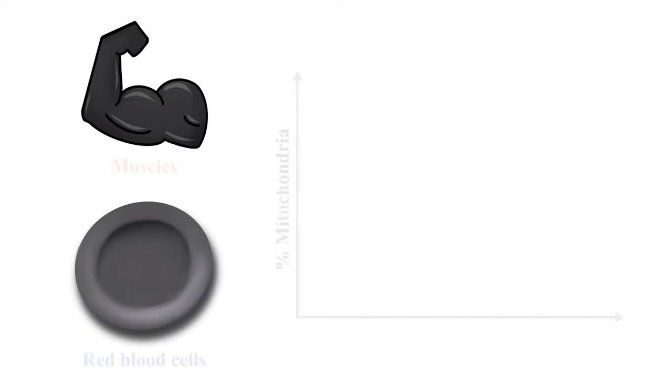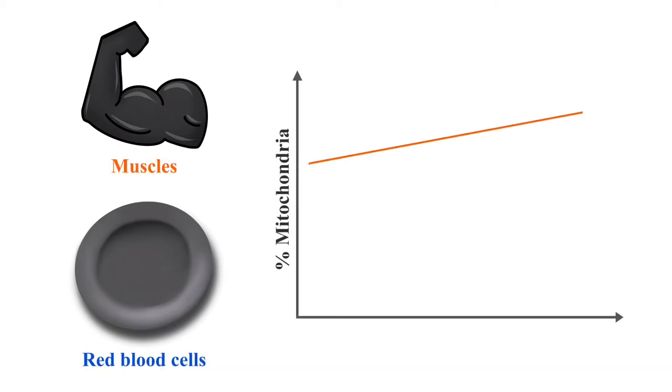The number of mitochondria in a cell depends on how much energy that cell needs to produce. Muscle cells, for example, have many mitochondria because they need to produce energy to move the body. Red blood cells, on the other hand, which carry oxygen to other cells, have none because they don't need to produce their own energy.